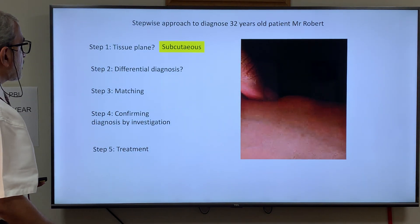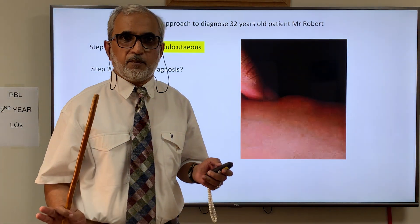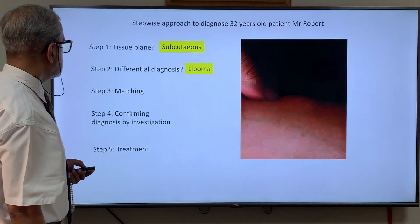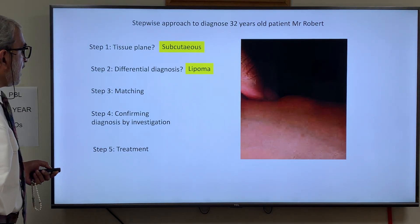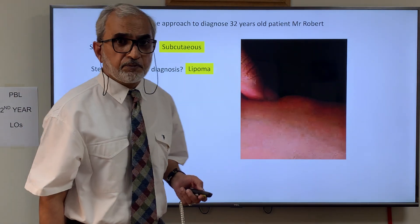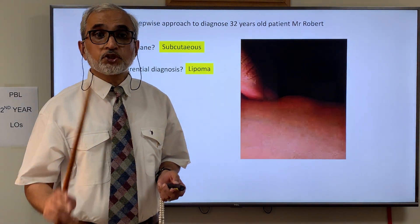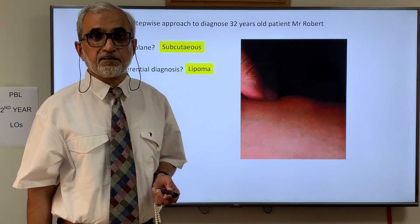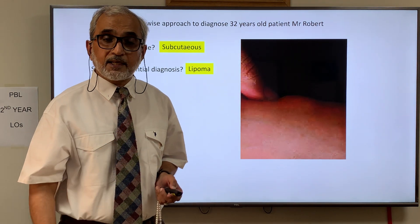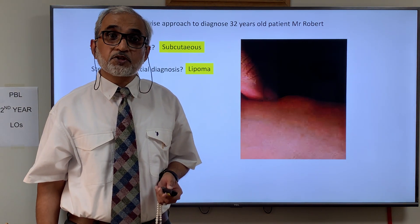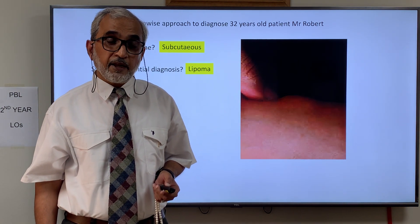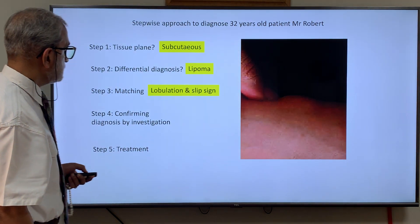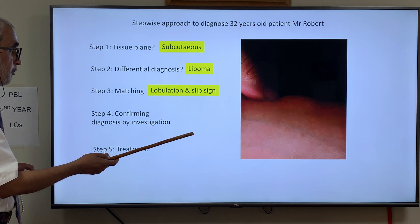In the differential diagnosis, I knew that the common swelling in subcutaneous tissue is lipoma, so I thought of lipoma. From reading clinical books like Norman Browse, I knew there are two characteristic features of lipoma: lobulation and slip sign. On clinical examination, the lobulation became prominent when I pressed the swelling, and slip sign was present. So clinically, it was a lipoma.